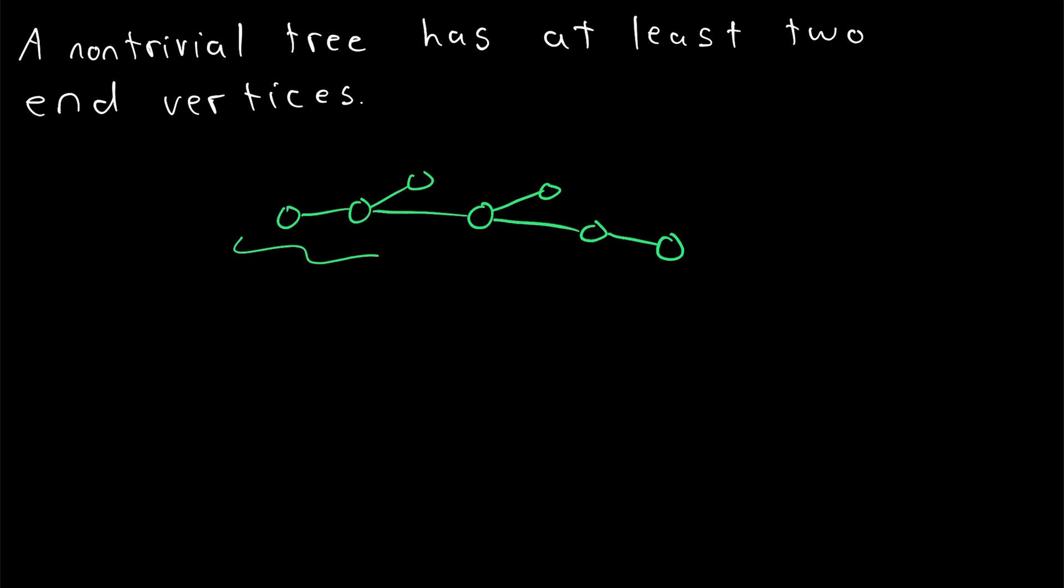Then, if we know that our general tree graph has at least two end vertices, we could delete either one or both of those guaranteed end vertices, and we would get another tree with fewer vertices, which means we could apply our induction hypothesis to that resulting tree. And we know we would have a tree because in a connected graph, deleting an end vertex doesn't disconnect the graph. And of course, if we have no cycles in a graph to begin with, we can't get a cycle by deleting a vertex. So this result can come in handy when doing induction proofs.